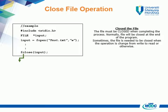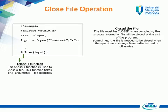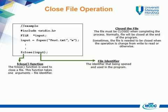The fclose function is used to close a file. This function takes one argument, which is the file identifier — the identifier that has been opened and used in the program. From the explanation, the syntax for the close operation is presented.